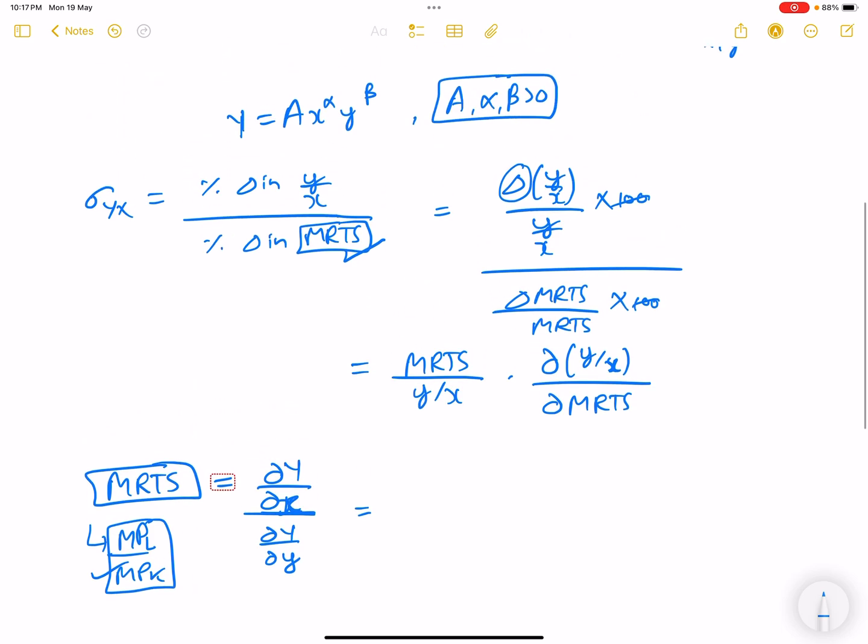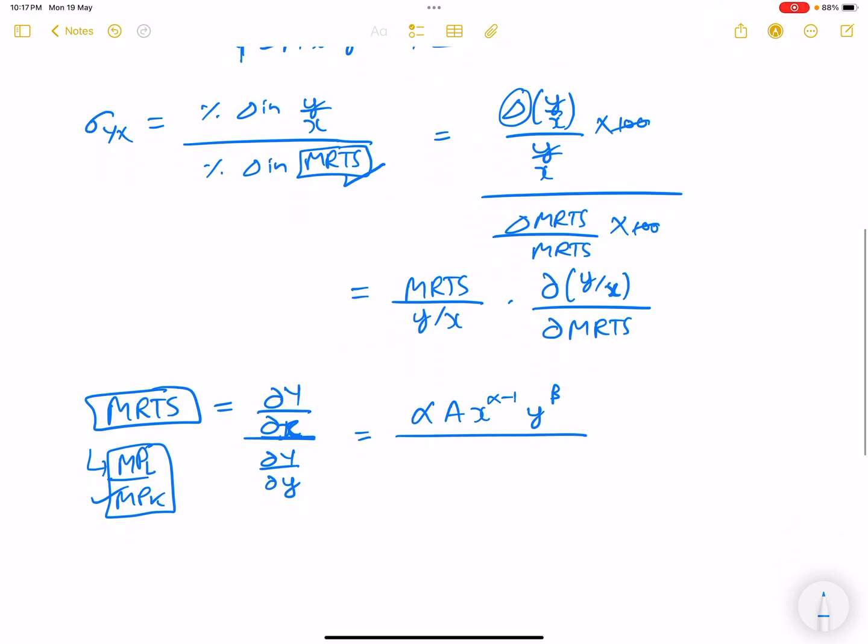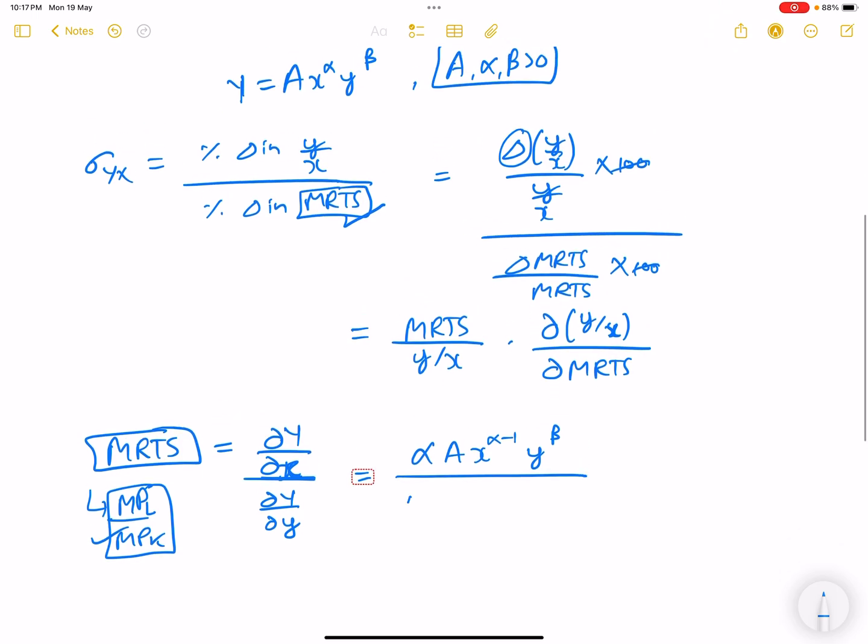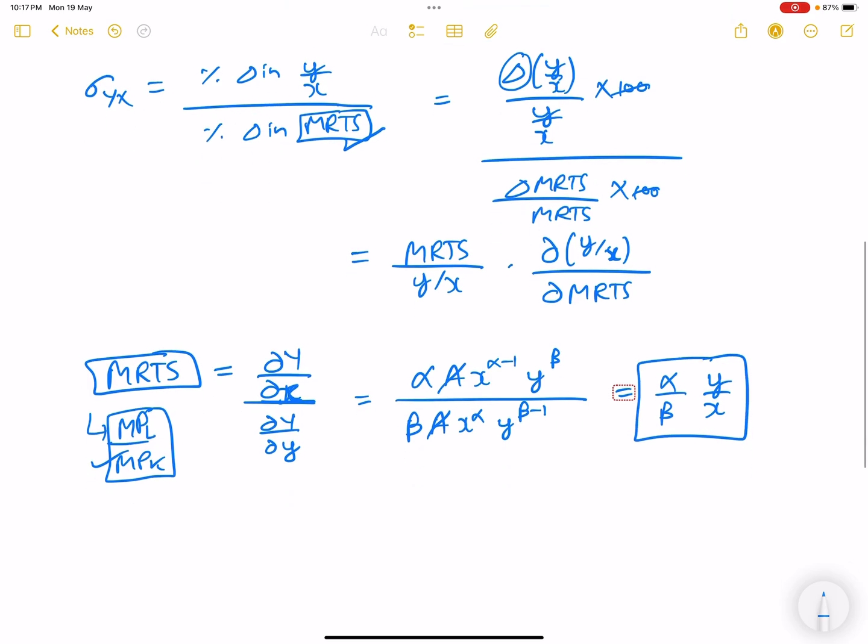Differentiating this with respect to x gives α A x^(α-1) y^β. With respect to y gives β A x^α y^(β-1). This cancels out to give α/β times y by x. So this is what MRTS is coming out to be.